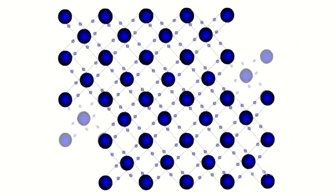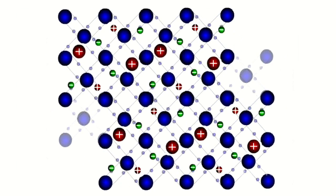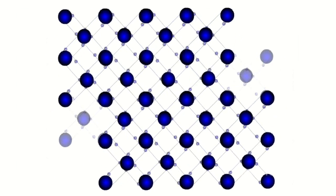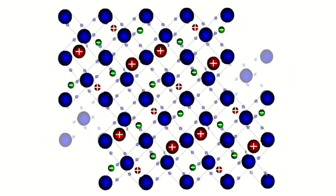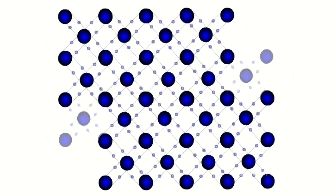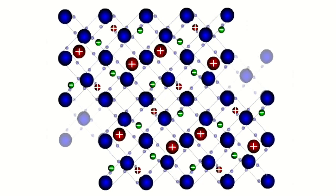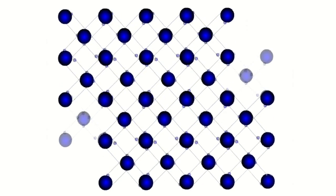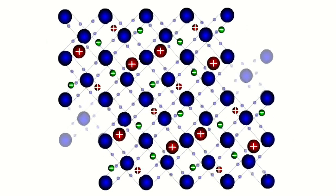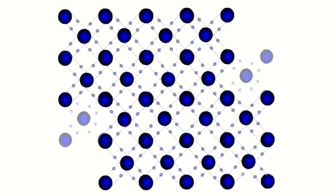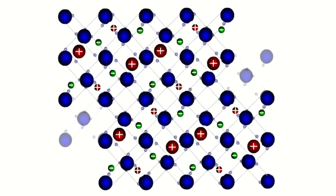On the other hand, an occurred positive ion can capture an electron of a neighboring atom and become neutral, while this neighboring atom will convert into a positive atom. Thus positive charges, called holes, migrate across a crystal.